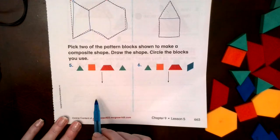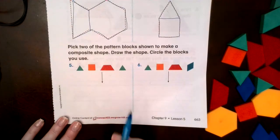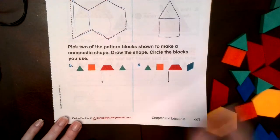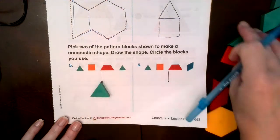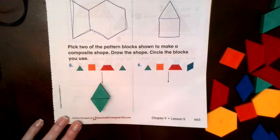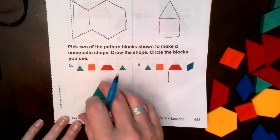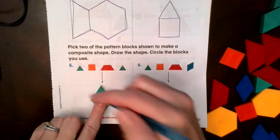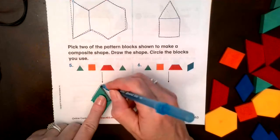All right, let's put two kind of walk shown to make a composite shape. Draw the shapes, circle the blocks we used. So let's see, I kind of want to use two triangles. I want to see what that does. If I put two triangles together I can make a diamond shape. So I'm gonna go ahead and trace that the best I can.